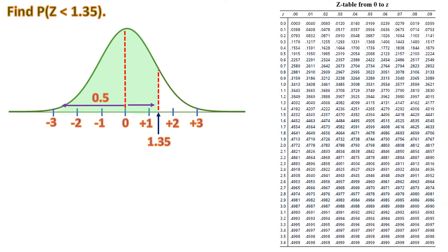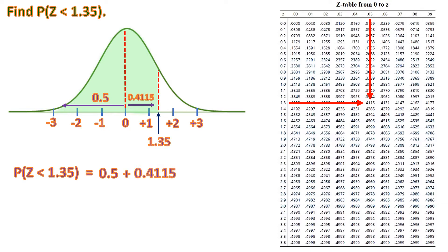Let me teach you how to use it. Our value is 1.35, so we look for row 1.3 on the left vertical column, and column 0.05, giving a total of 1.35. The area for this part is 0.4115 according to the z-table. So the probability that z is less than 1.35 equals 0.5 (the left half) plus 0.4115 (the area from 0 to 1.35), which equals 0.9115.